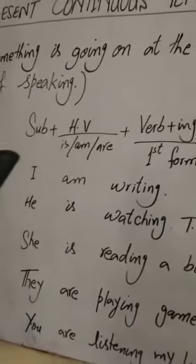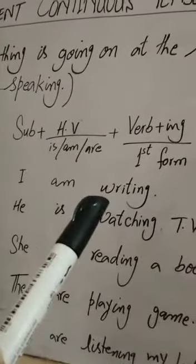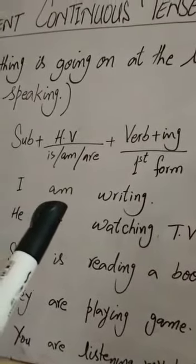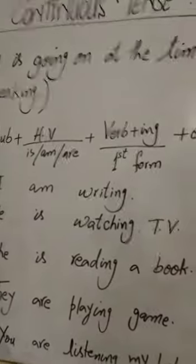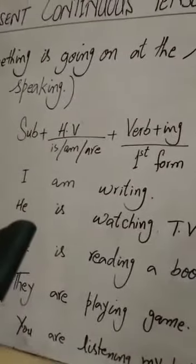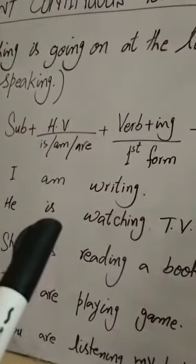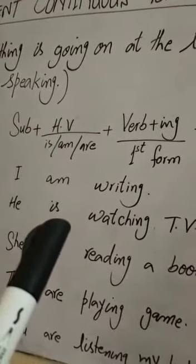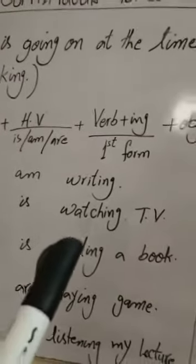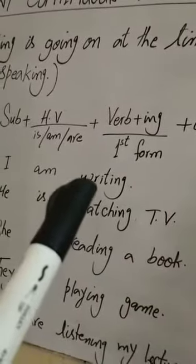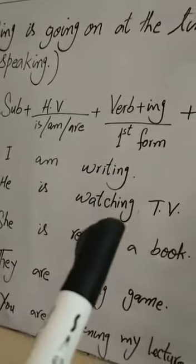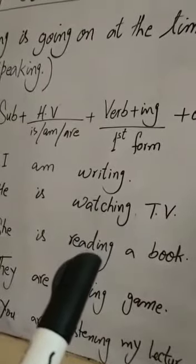Sentences دیکھیے: I am writing. Am کا use صرف I کے ساتھ ہوتا ہے، اس کے علاوہ کسی بھی اور noun یا pronoun کے ساتھ نہیں use کرتے۔ He is watching TV — دیکھیے he کے ساتھ is use کیا ہے۔ Singular noun جتنے بھی ہیں، he، she اور it کے ساتھ is use ہوتی ہے۔ Verb کی first forms تھیں: write، watch، read — لیکن ہم نے ing کا use کر دیا ہے present continuous tense کے لیے۔